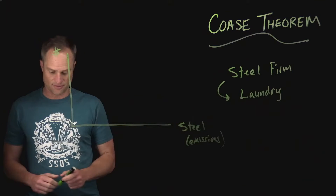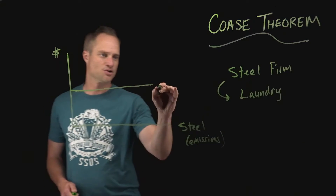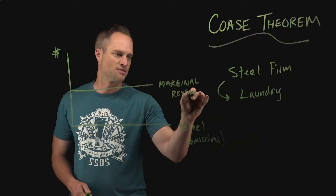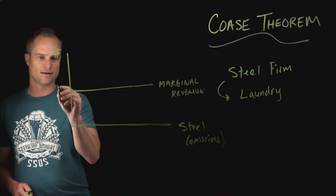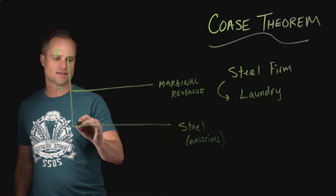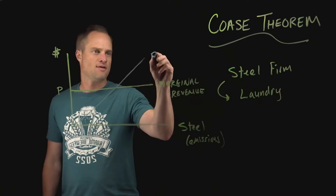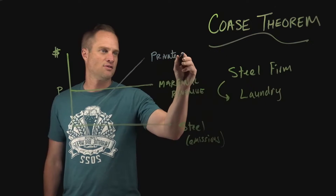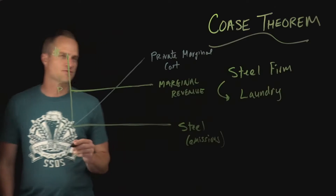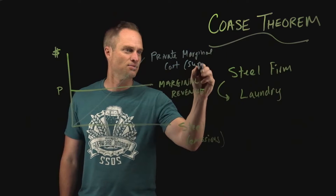On the vertical axis we're going to have monetary values. We can look at this horizontal line which is going to be the price or the marginal revenue for the steel firm. This is a fixed price. Imagine that they operate in some competitive market and so they're price takers — that's where we have P. Next up we have private marginal cost, or what we call the supply curve — the marginal cost for the steel firm to produce and bring the product to market.